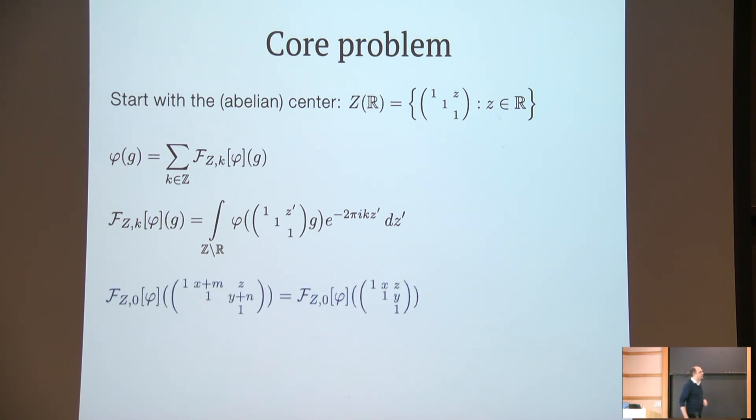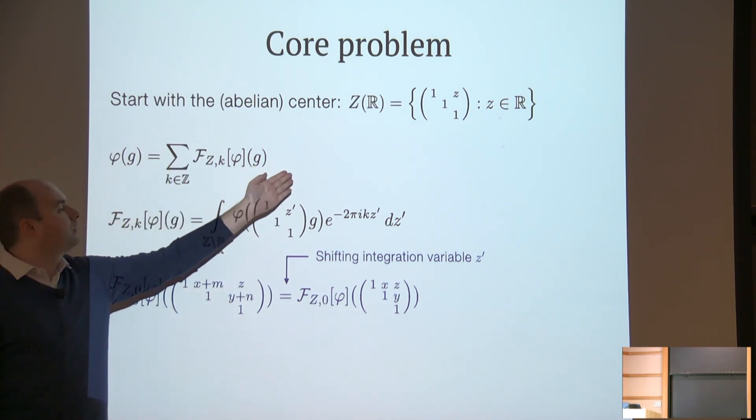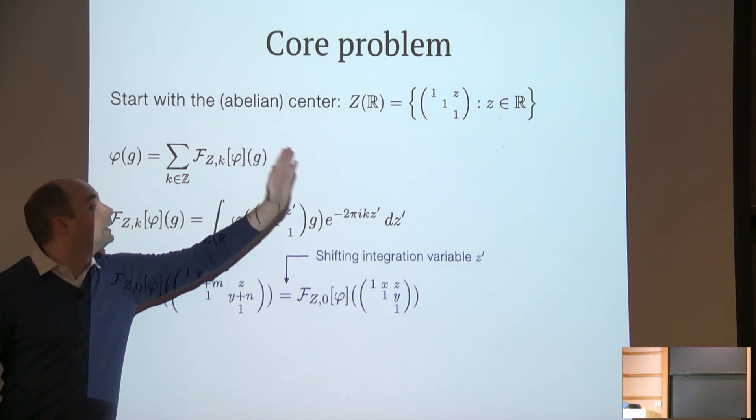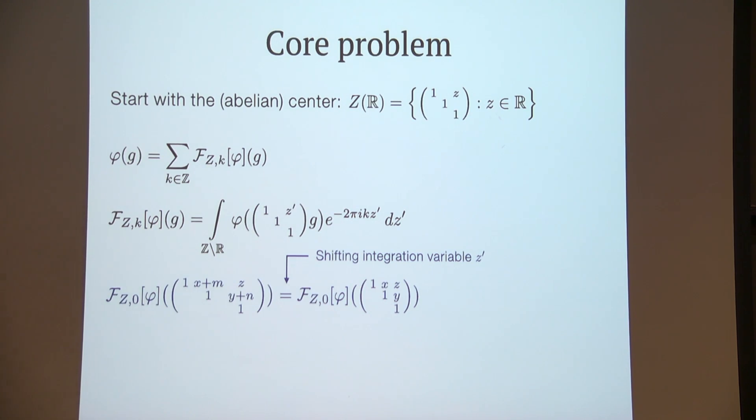It is in fact invariant under shifts in x and y, and this is because we have the freedom of shifting the integration variable z'. So we can separate this into the constant term, the k equals 0 mode, and the remaining modes, and Fourier expand the constant term in x and y.